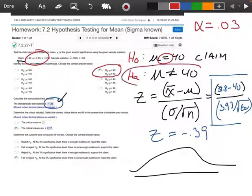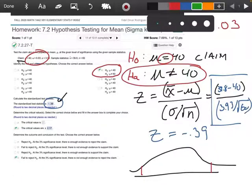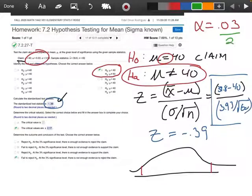Remember, the way we do that, we always look at the Ha. Since Ha says it's not equal to, this is going to be a two-tail test.